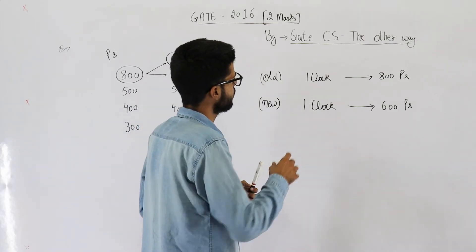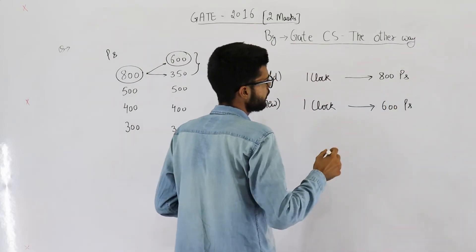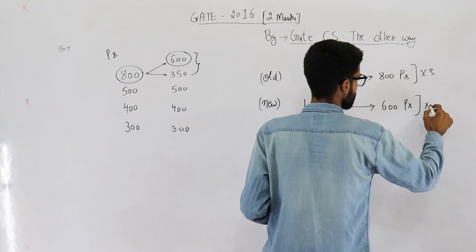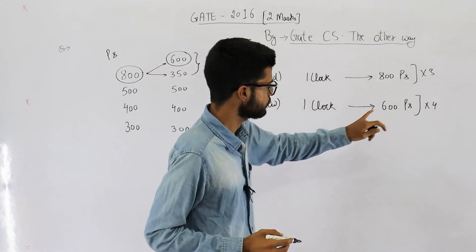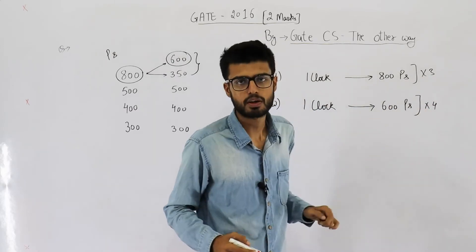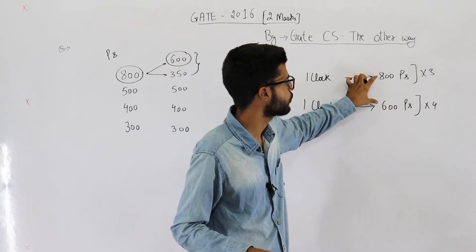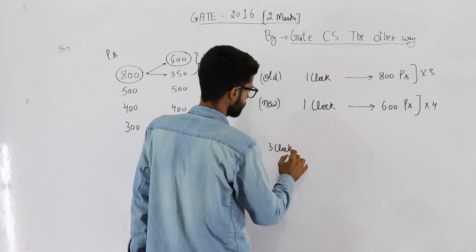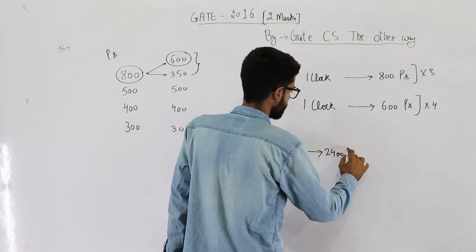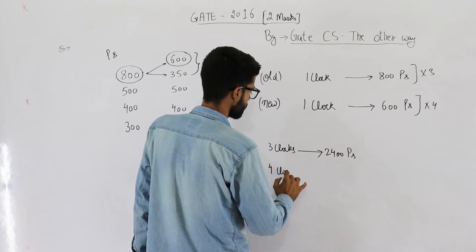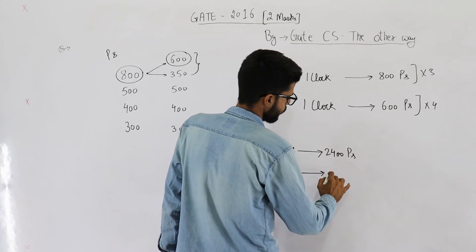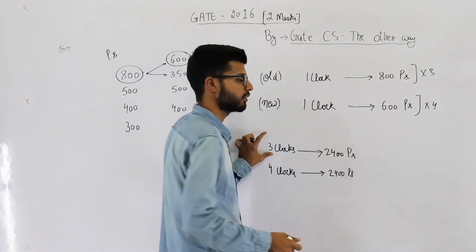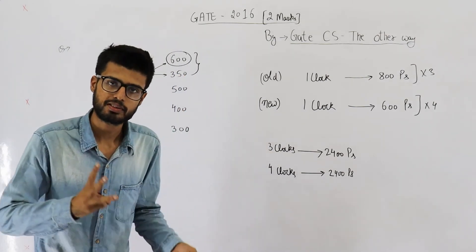The easy approach is to find the LCM. Multiply the first equation by 3 and the second by 4, because 8×3=24 and 6×4=24 — we're making both right-hand sides equal to 2400. So equation 1 becomes: 3 clocks require 2400 picoseconds, and equation 2 becomes: 4 clocks require 2400 picoseconds.